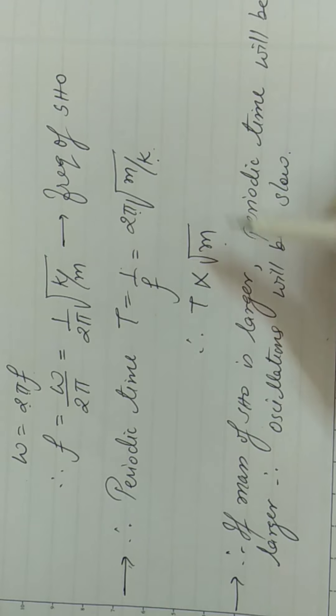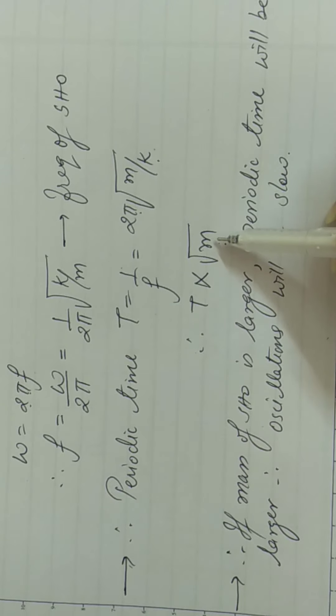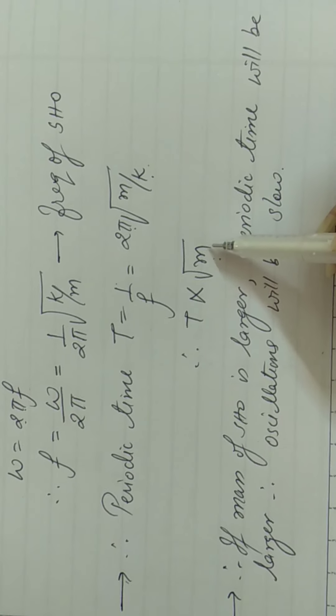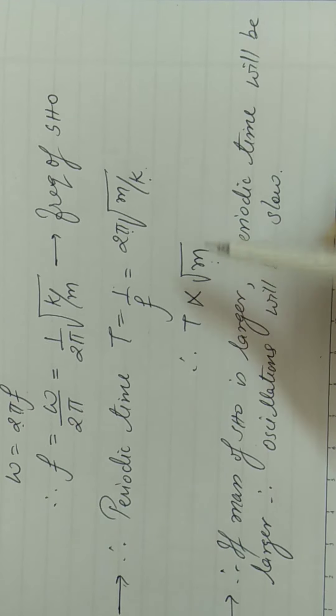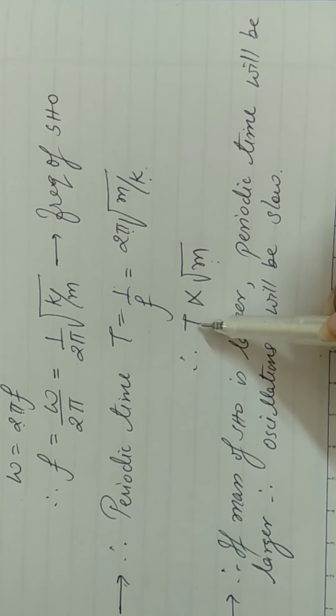So from this what I can say, if mass of the oscillator is big, agar ham ek pendulum use kar te hain, pendulum ka jo metal ka ball ham use karenge, if it is of a large mass, toh kya ho jayega? Periodic time also will be more.